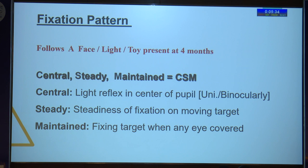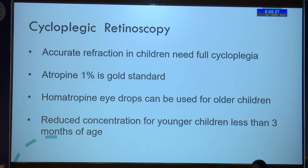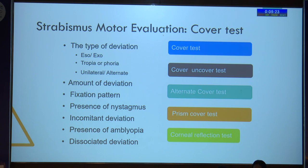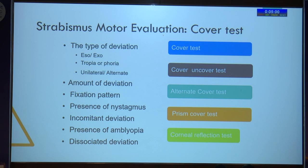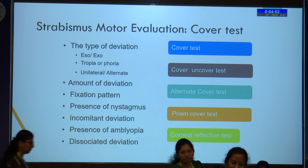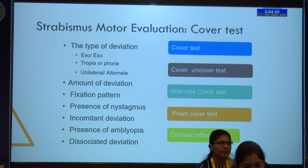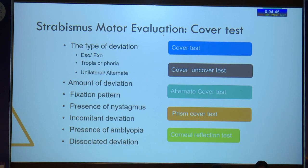We should be able to know the fixation pattern of the child — this is how we manage in pre-verbal children: central, steady, maintained fixation. Coming to motor evaluation: the cover test encompasses almost all tests — cover-uncover test, alternate cover test, prism cover test. What information we get out of it is the type of deviation — whether it is eso, exo, hypo, hyper, unilateral or alternate — the amount of deviation, fixation pattern, presence of latent nystagmus, incomitant deviation depending on fixing eye, and any associated dissociated vertical or horizontal deviation.